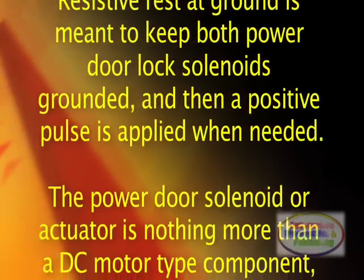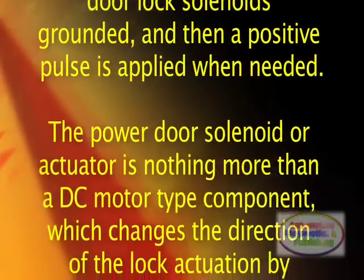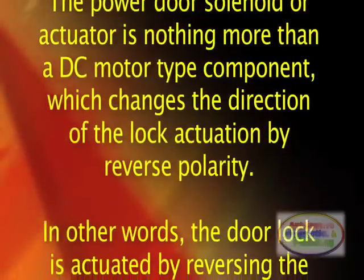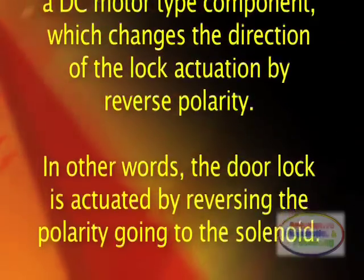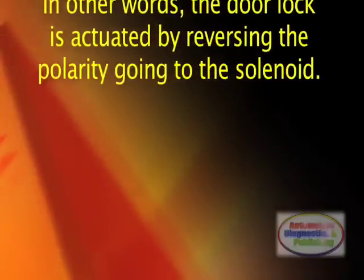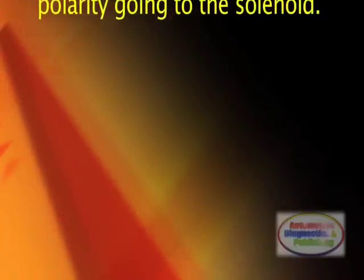The power door solenoid or actuator is nothing more than a DC motor type component, which changes the direction of the lock actuation by reverse polarity. In other words, the door lock is actuated by reversing the polarity going to the solenoid.